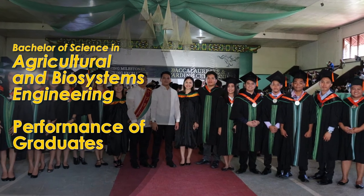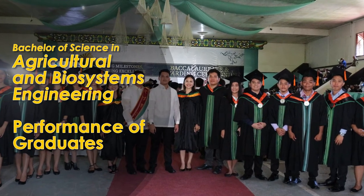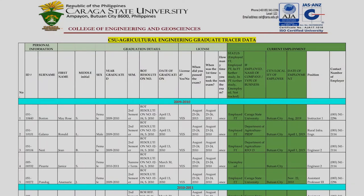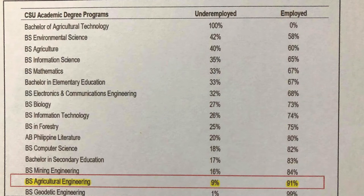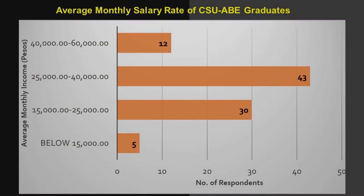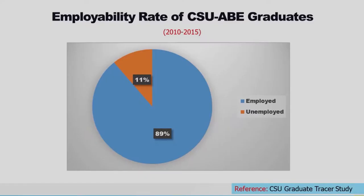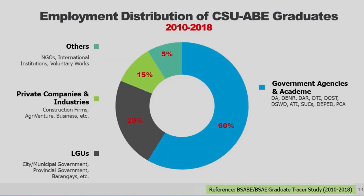Based on the recent Tracer Study conducted by the university, the Agricultural and Biosystems Engineering is one of the top three programs with the highest employment rate of up to 90%. The Agricultural and Biosystems Engineering graduates are receiving an average salary of more than 25,000 pesos. Most graduates are employed in government agencies such as the Department of Agriculture and its bureaus, Department of Education, DENR, LGUs, and other private firms and industries.